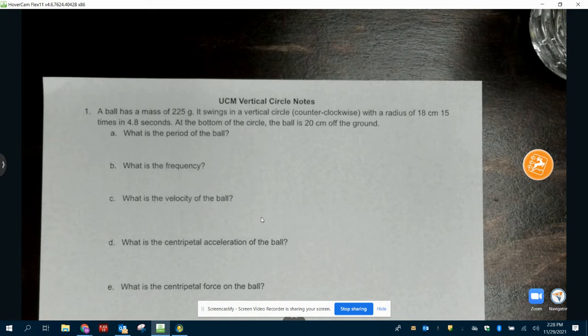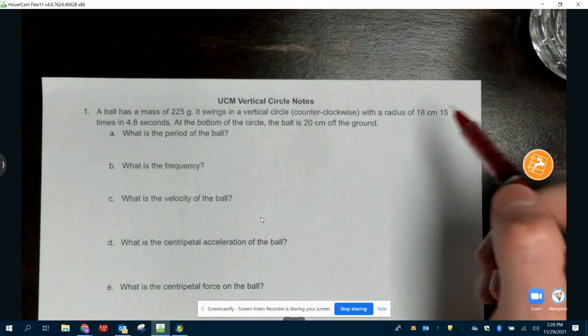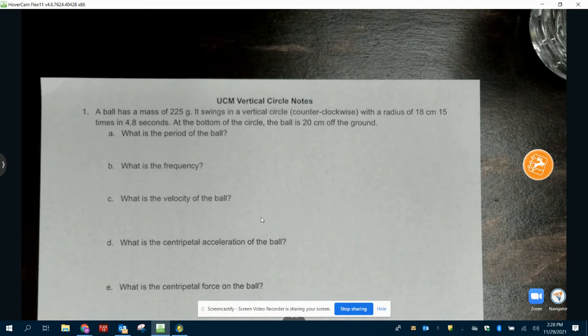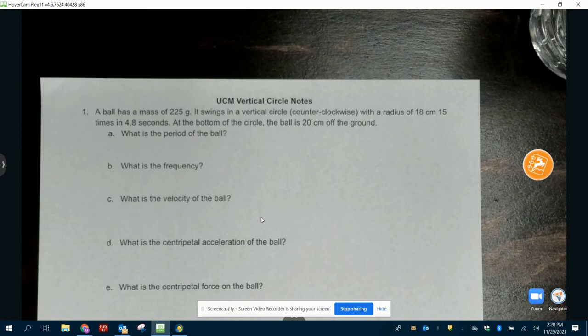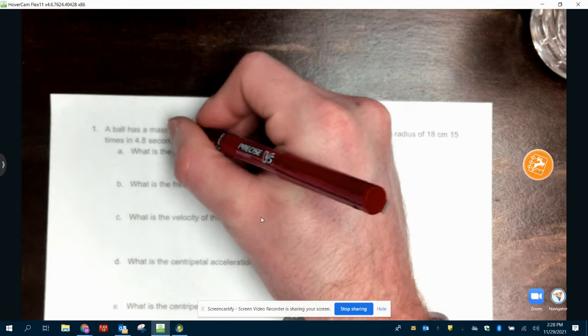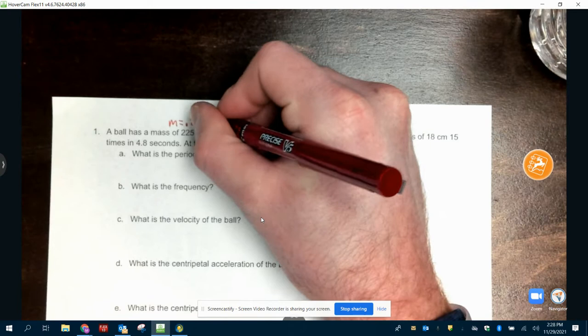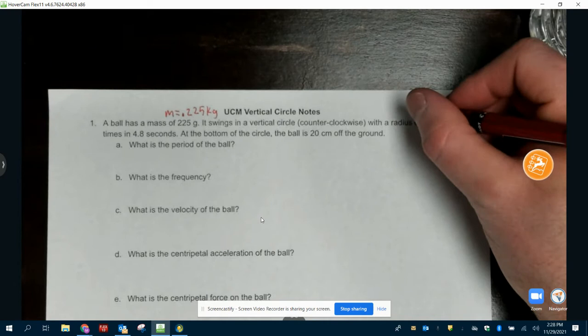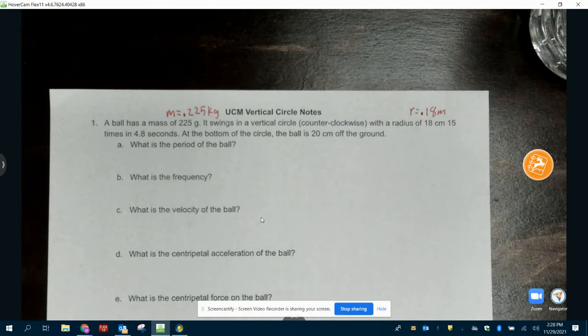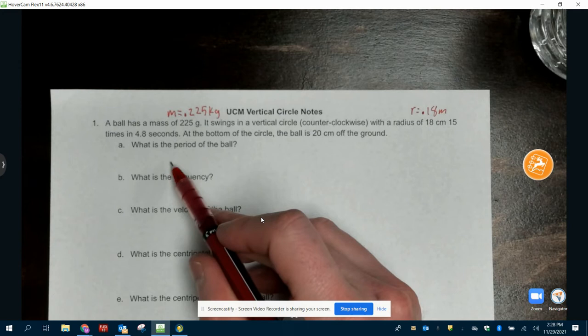So we've got a ball has a mass of 225 grams. It swings in a vertical circle going counterclockwise with a radius of 18 centimeters 15 times in 4.8 seconds. At the bottom of the circle, the ball is 20 centimeters off the ground. So we've got a lot of information here. First thing I want to do is go through. We've got mass, we need to put it into kilograms, so it's actually going to be 0.225 kg. We've got a radius of 18 centimeters, which is 0.18 meters. We've got 15 times in 4.8 seconds.